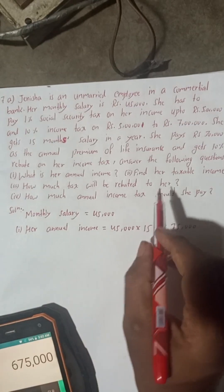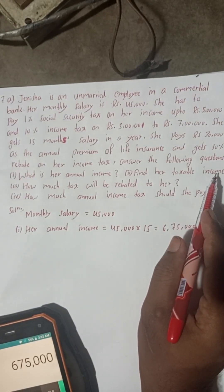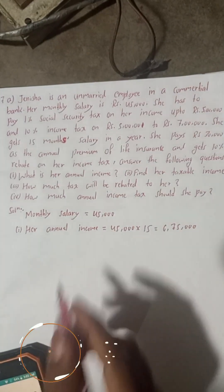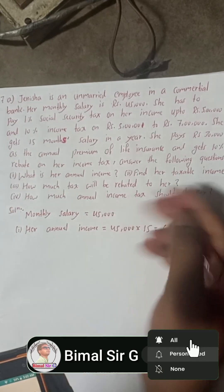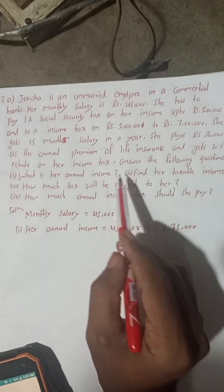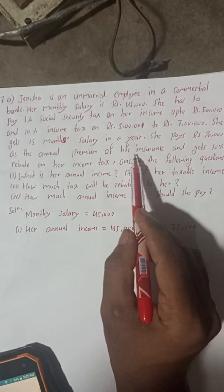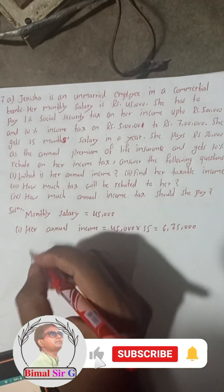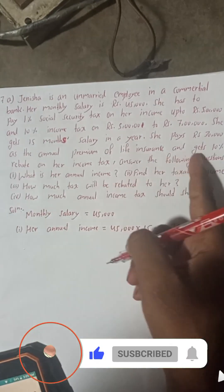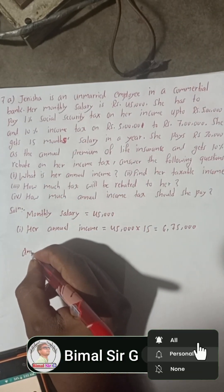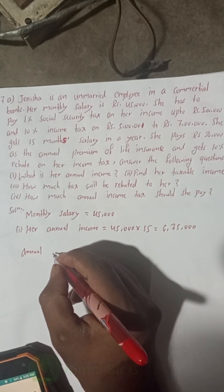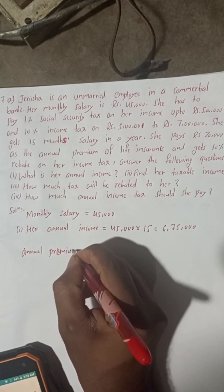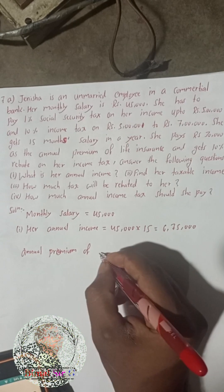Now we have to find her taxable income. To find taxable income, we first need the tax rebate amount. The tax rebate is related to the annual premium of life insurance. For life insurance, there are two conditions: the maximum limitation is Rs. 40,000, and the actual premium paid is Rs. 30,000.